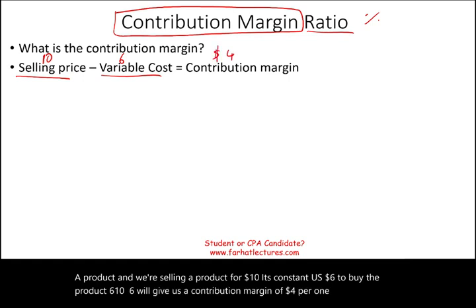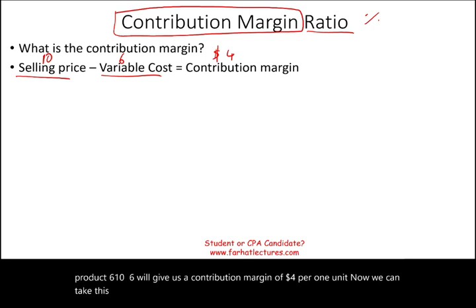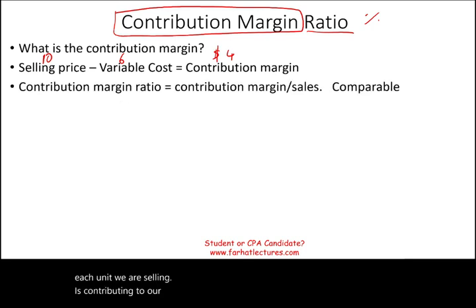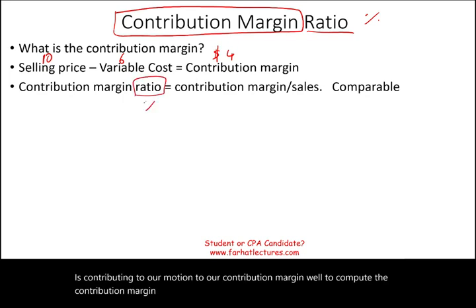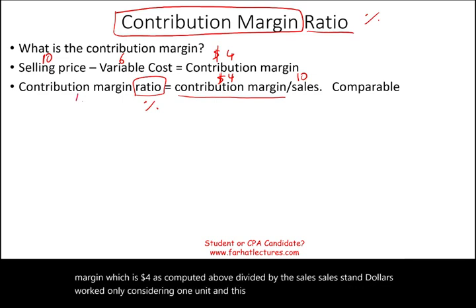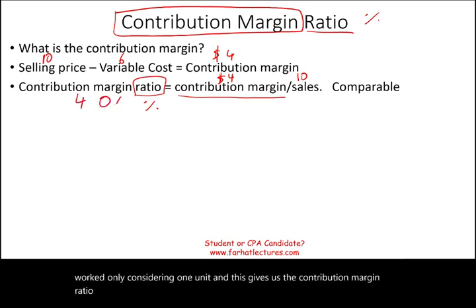Now we can take this information and compute a percentage to figure out how much each unit we are selling is contributing to our contribution margin. To compute the contribution margin ratio, which is a percentage, we take the contribution margin — which is $4 as computed — divided by sales, which is $10. We're only considering one unit, and this gives us a contribution margin ratio of 40%.